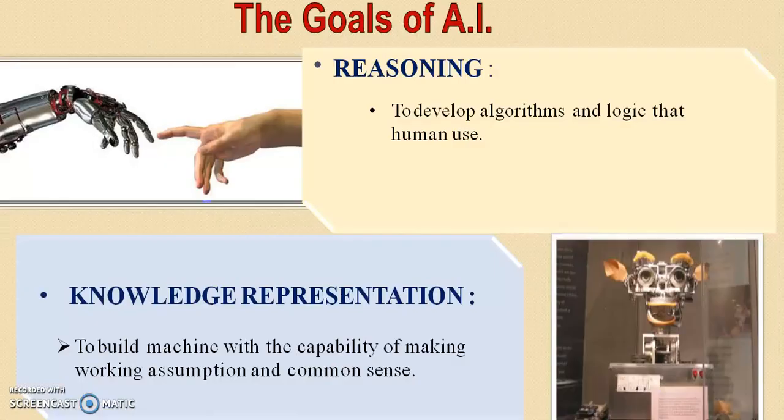Now, the next topic is the goals of AI. The first goal is reasoning — developing the algorithms and logic that humans use so that machines can apply the same reasoning. For example, if I am on the 20th floor of a building and want to reach the ground floor, I must use either a lift or stairs. If a machine can apply such logic, then we can say the machine has reasoning capability.